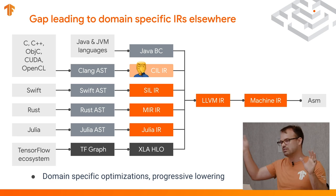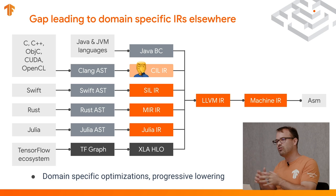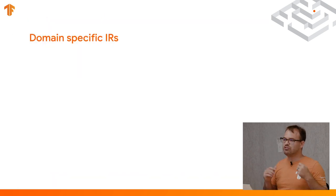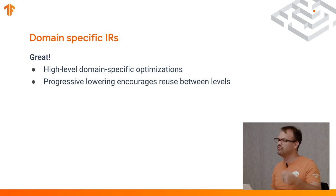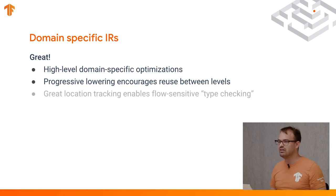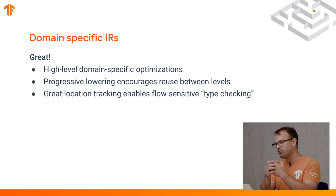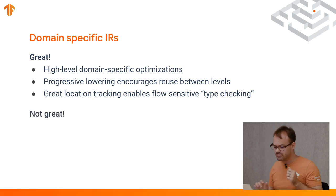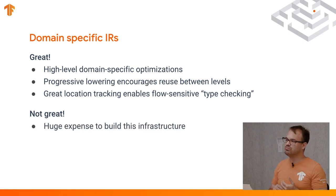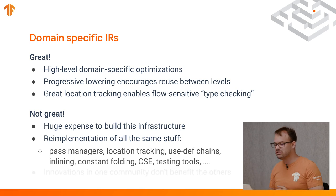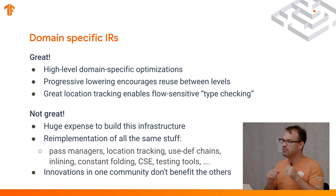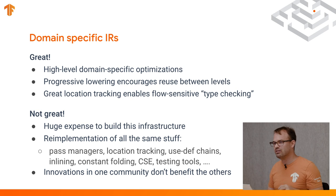This means we can do domain-specific optimizations and progressive lowering, so we can have simpler hops between different systems. Domain-specific IRs allow high-level domain-specific optimizations. This progressive lowering encourages reuse between different levels because you can have smaller passes doing dedicated things. It's great for location tracking and enables some flow-sensitive type checking. The downside is it's a huge expense to build this infrastructure — you're re-implementing all the same stuff: pass managers, location tracking, use-def chains, inlining, all these things. And more importantly, innovations in one community don't benefit other communities.